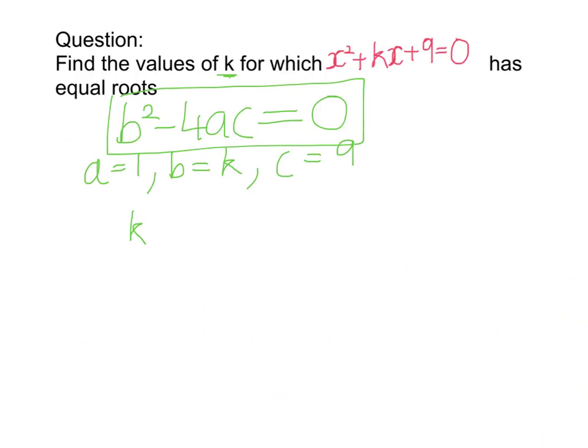So my b is k, so I want k squared minus 4 times by a, which is 1, and c, which is 9, and that's equal to 0.